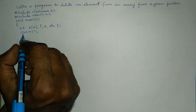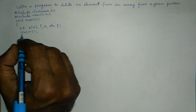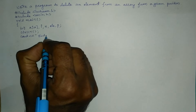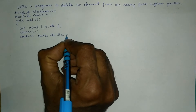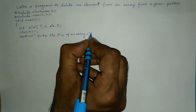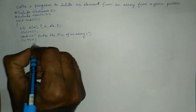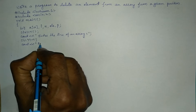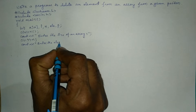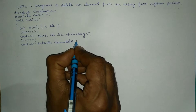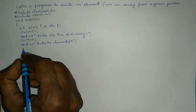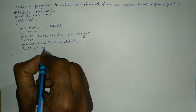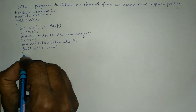We can optionally write clrscr() to clear the screen. Then using cout we'll ask the user to enter the size of the array, and cin >> n will hold the number of elements. Next, cout will ask the user to enter the elements. The backslash n brings the cursor to the next line so we can insert elements one by one.